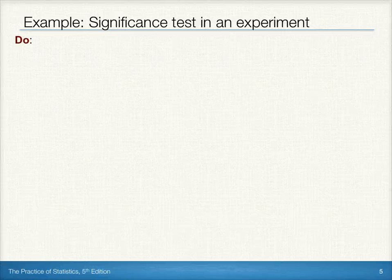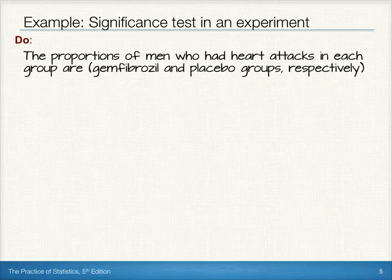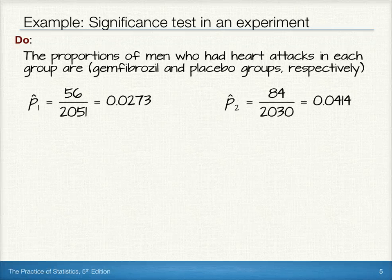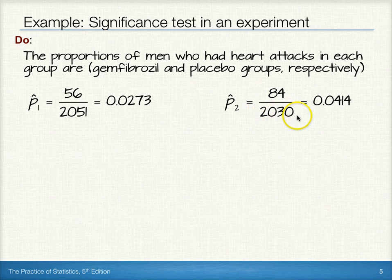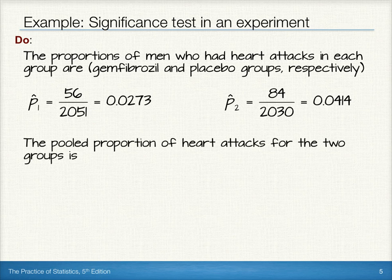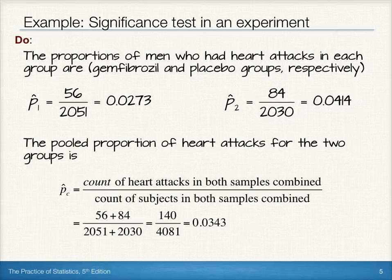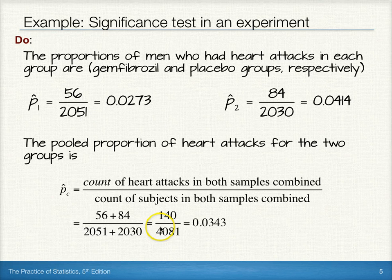With those conditions met, we can perform our calculations. The proportions of men who had heart attacks in each group can be calculated. For the gemfibrozil group, p̂1 is 56 individuals who had heart attacks out of 2,051, for a sample proportion of 0.0273. In the placebo group, 84 individuals out of 2,030 had heart attacks, for a sample proportion of 0.0414. Our pooled proportion is found by taking the count of heart attacks in both samples combined divided by the total subjects: 140 out of 4,081, giving a pooled proportion of 0.0343.